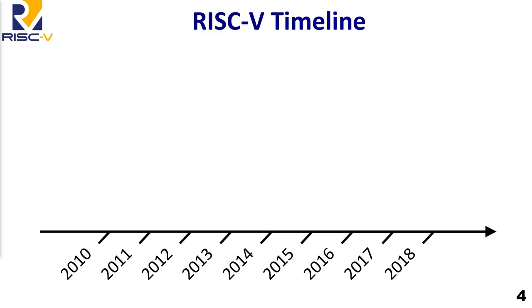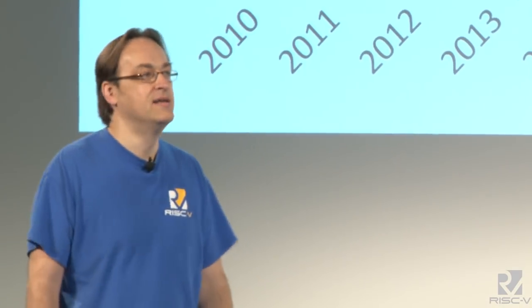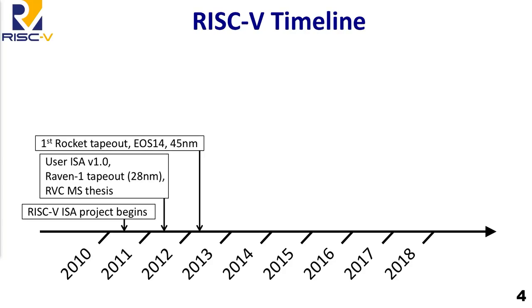Looking at the RISC-V timeline: we started in May 2010 at UC Berkeley — we were fed up hacking on commercial ISAs with all their IP entanglements and complexity. The first tape-out was in 2011 in 28nm FDSOI from ST; that chip was called Raven 1. At the same time we put out the compressed extension as a first draft in Andrew Waterman's master's thesis, and the first tape-out of the Rocket chip — Berkeley's open-source implementation in the Chisel hardware description language.